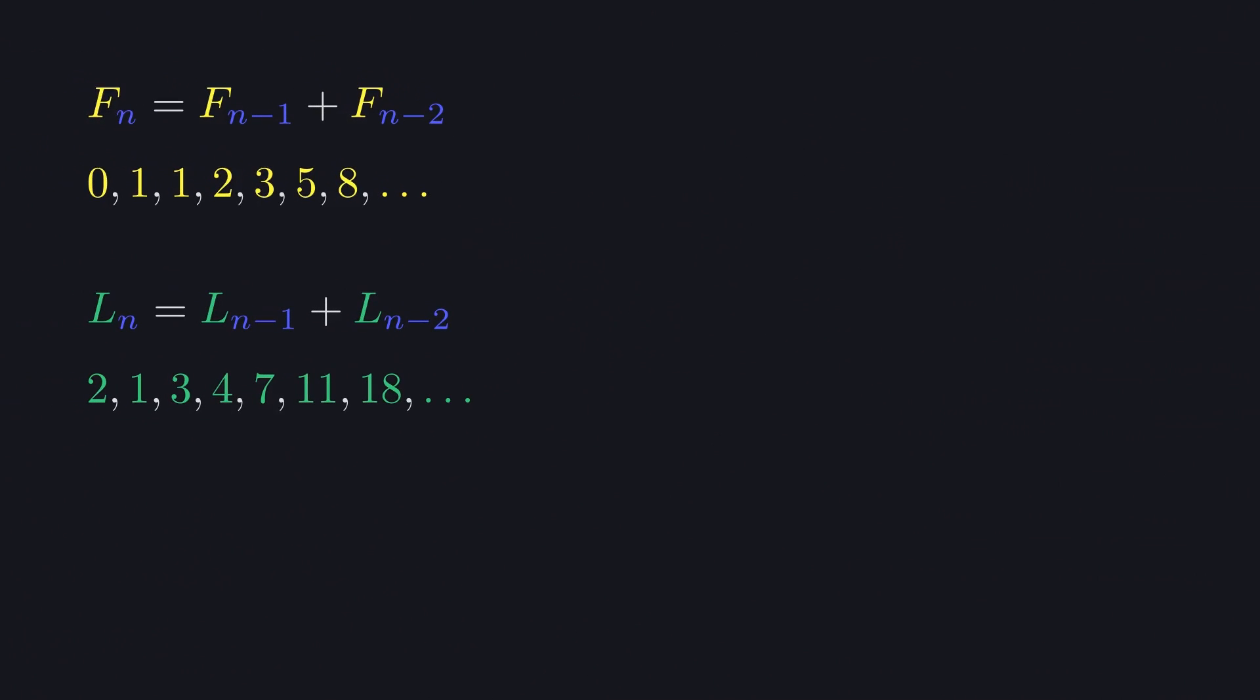Fibonacci and Lucas numbers both follow a simple recurrence relation, defining each subsequent number as a sum of the two previous ones. What makes them different is just the numbers we choose to start this relation with.